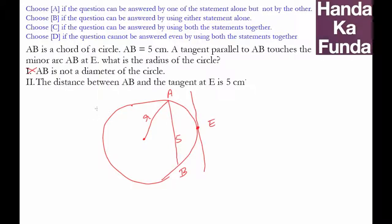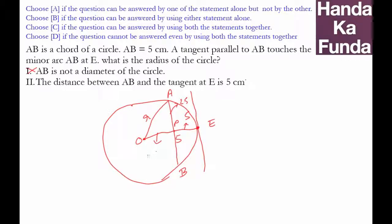The second statement says the distance between AB and the tangent at E is 5 centimeters — essentially this distance here. Calling this point P, with O as the midpoint, that means AP is 2.5 and PE is 5 units. So OP, the distance from center to chord, will be R minus 5.